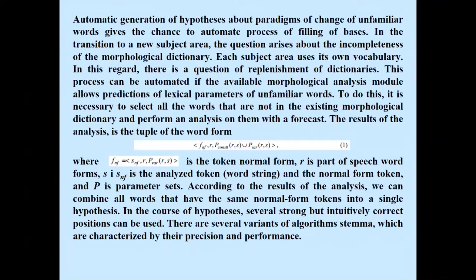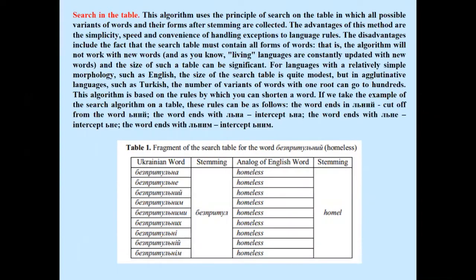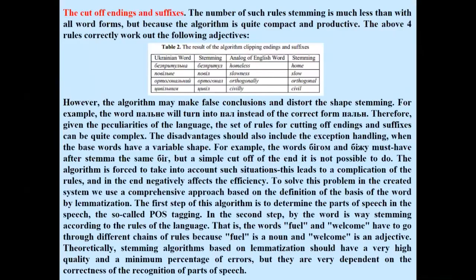There are several variants of stemming algorithms which are characterized by their precision and performance. The first is search in the table: this algorithm uses the principle of searching a table in which all possible variants of words and their forms after stemming are collected. The advantages are simplicity, speed, and convenience of handling exceptions to language rules. The disadvantage is that the search table must contain all forms of words. The second is cutting of endings and suffixes: the number of such rules is much less than storing all word forms, so the algorithm is quite compact and productive. The disadvantages include exceptions and cases where base words have variable shape.